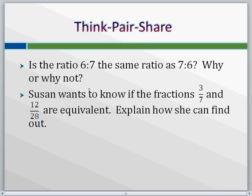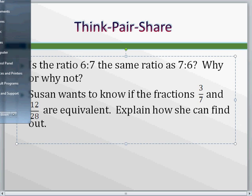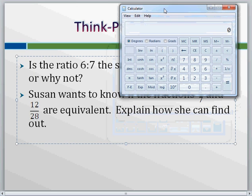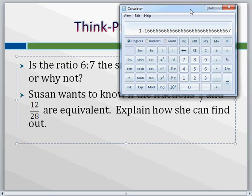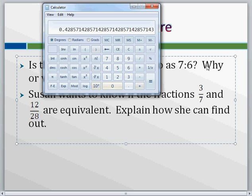Looking at the last bit here, answering a couple of quick questions. Is the ratio 6 to 7 the same as 7 to 6? No, it is not, just because if you divide those out, 6 over 7 gives you a certain fraction, 7 over 6 gives you another. They're not equivalent to each other. If Susan wants to know that the fractions 3 over 7 and 12 over 28 are equivalent, Susan can simply, in her calculator, type in 3 over 7, get point 428, and 12 over 28, we get the same decimal, so they are equivalent to each other. Alternatively, you can cross multiply. Hopefully this helped. Email me if you have any questions.